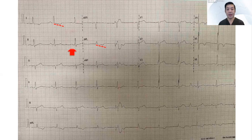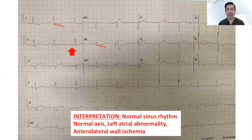If you look closely at lead 2, you can see a widened and notched P-wave. So the correct reading — after proper standardization and making sure that the leads are correctly placed — is actually normal sinus rhythm, normal axis, left atrial abnormality, and anterolateral wall ischemia.